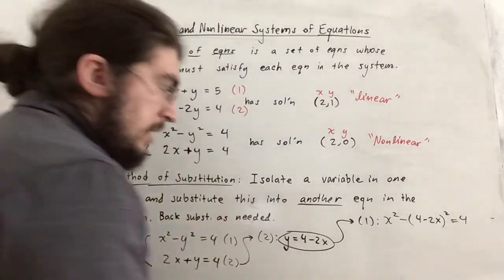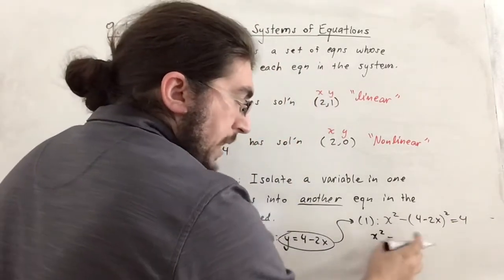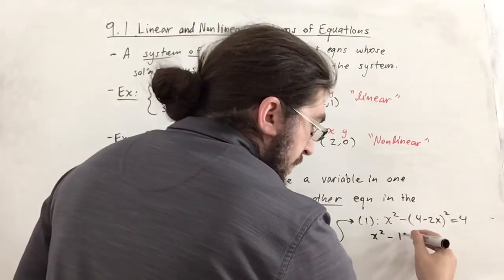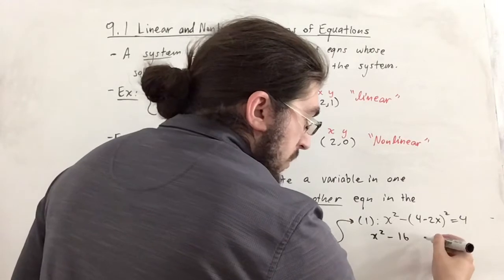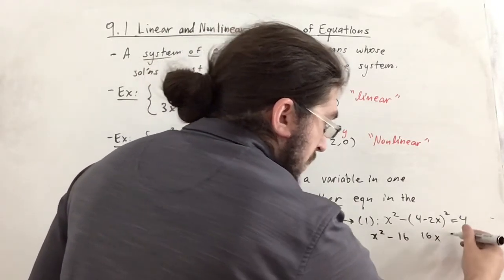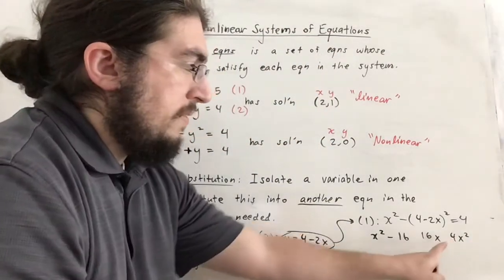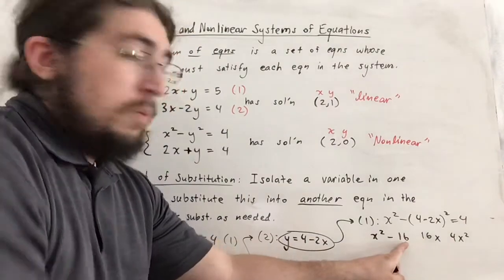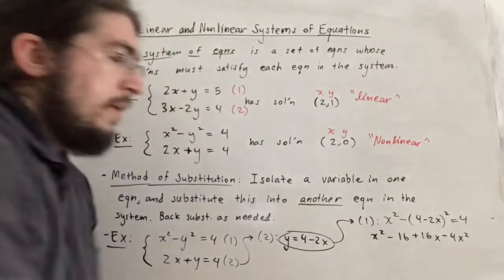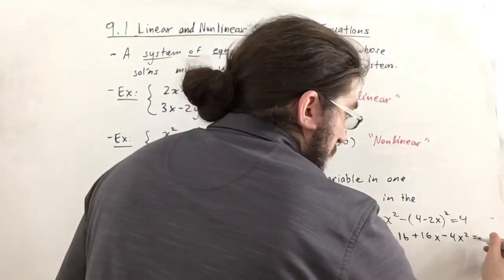I'll expand things out. We get x squared minus — foiling out (4−2x)² gives the first term squared, 2 times the product 8x which is 16x, and the last term squared, 4x². Since we're distributing a negative, the signs become: positive x², minus 16x, and plus 4x² with appropriate sign changes, equals 4.